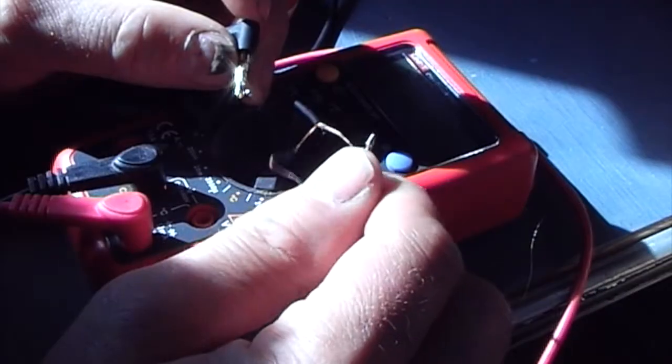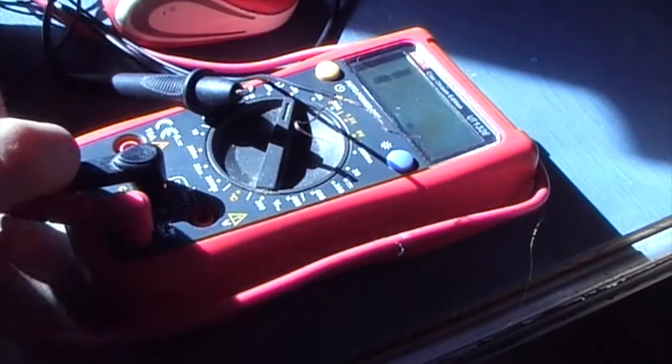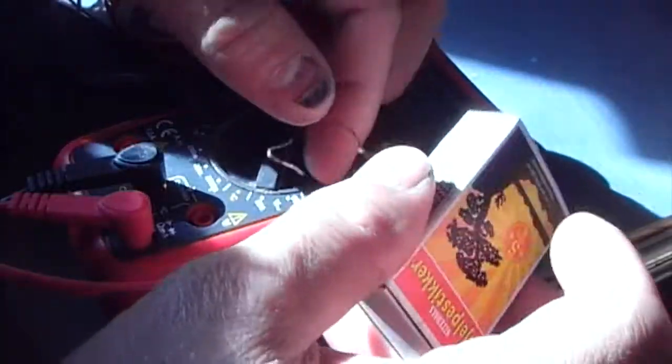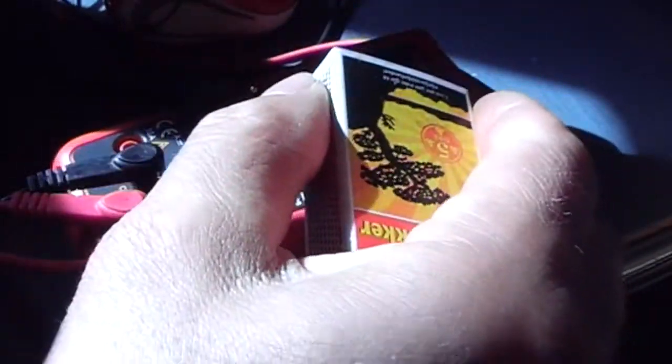If you've got a voltmeter you can check the continuity. Here I'm just sanding off any oxide or soot buildup from the burning.